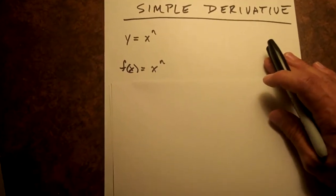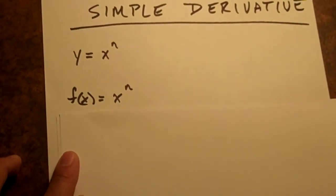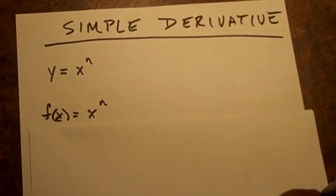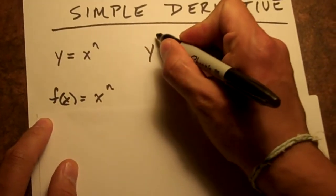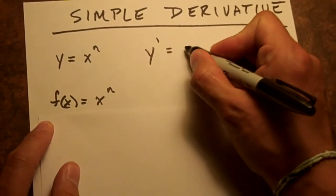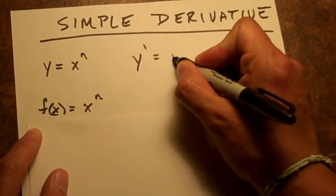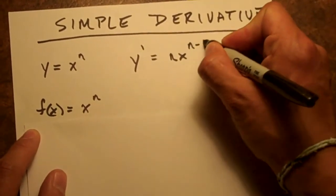A derivative is actually quite simple. You start with some function, y or f of x. Basically, what you do is you take this simple function and the notation for a derivative is prime. Well, it's one of the notations. The general formula is n times x to the power of n minus 1.